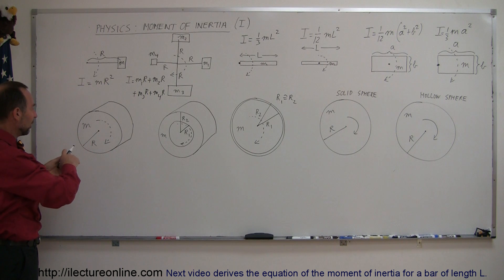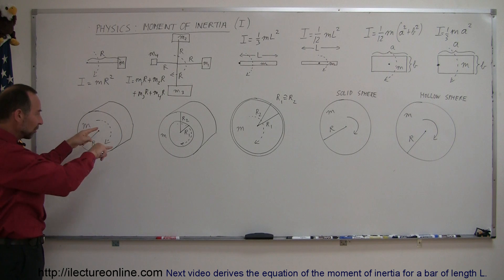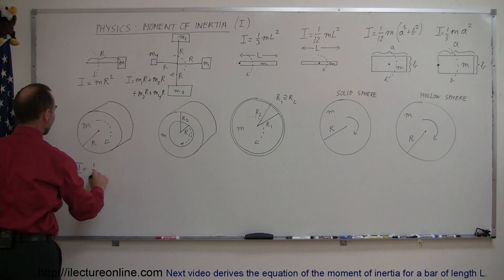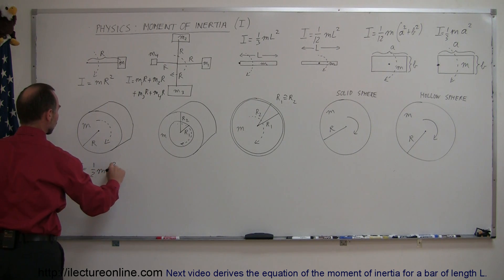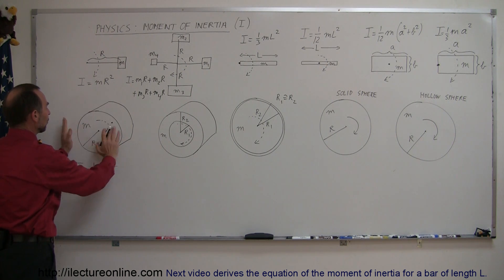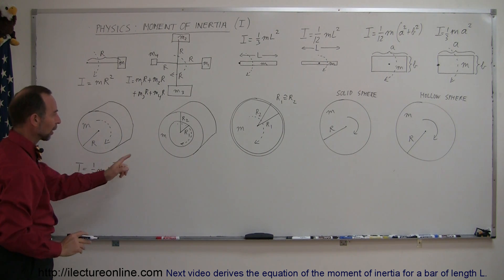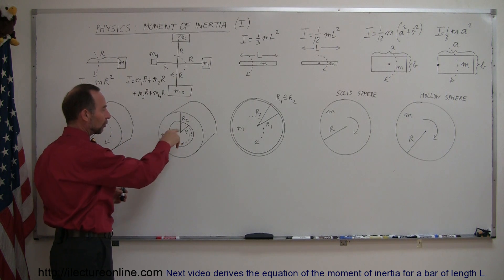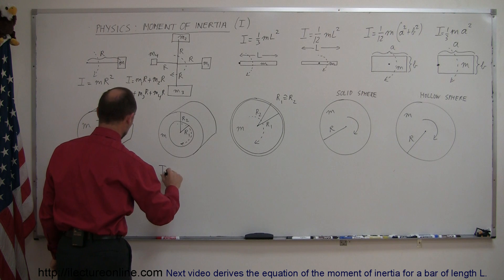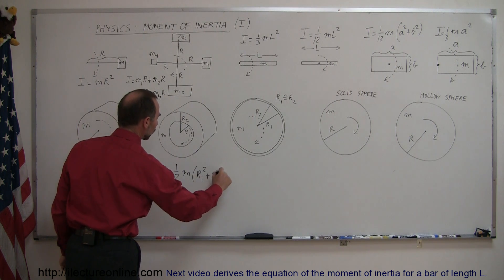Now for different kinds of objects. A solid cylinder rotating about its axis of rotation: not all the mass is at the outer edge, it's distributed throughout, so the moment of inertia is I = (1/2)MR². For a cylinder with a hollow portion and a certain shell thickness, the moment of inertia is I = (1/2)M(R1² + R2²), where R1 and R2 are the inner and outer radii.